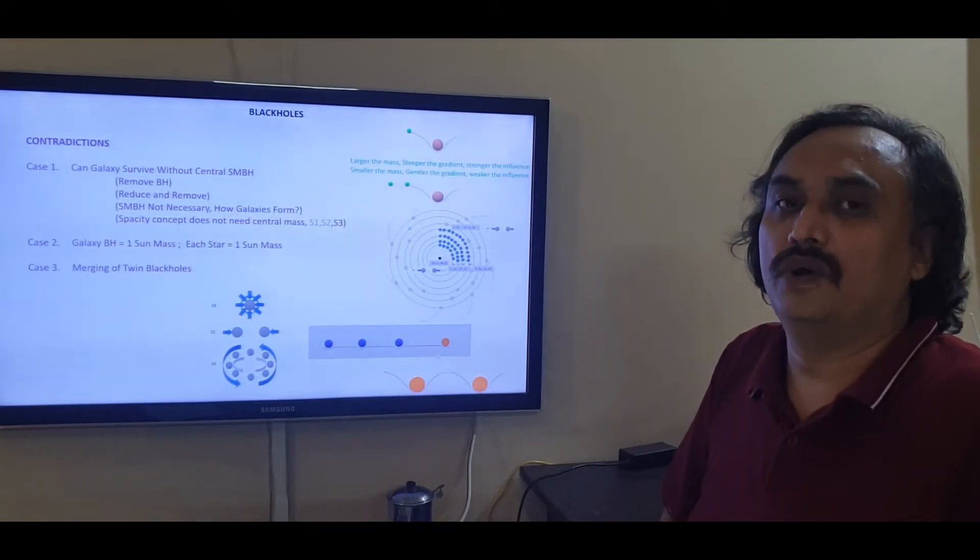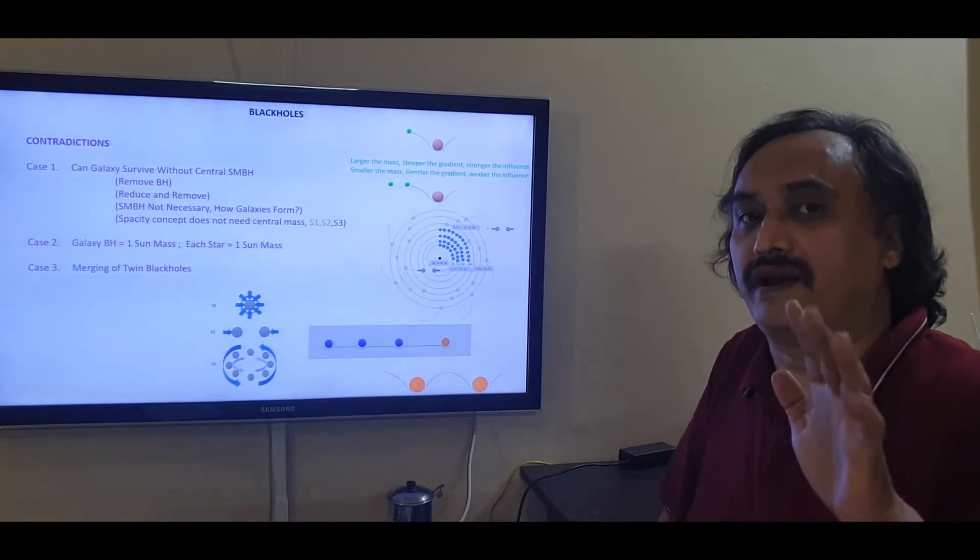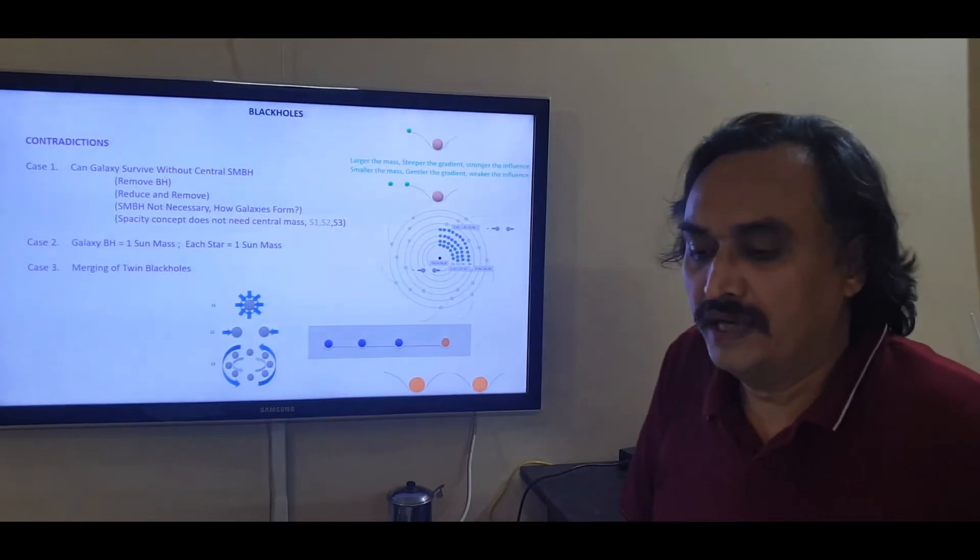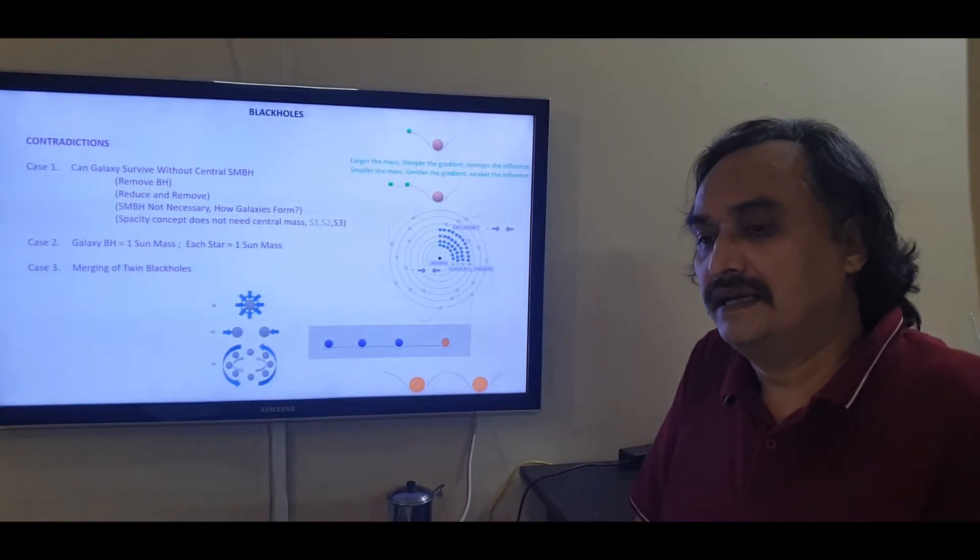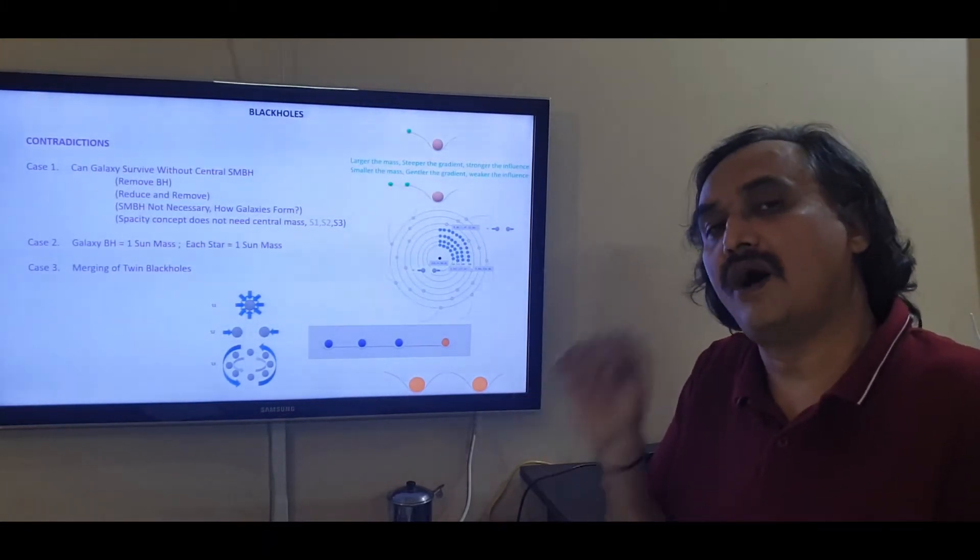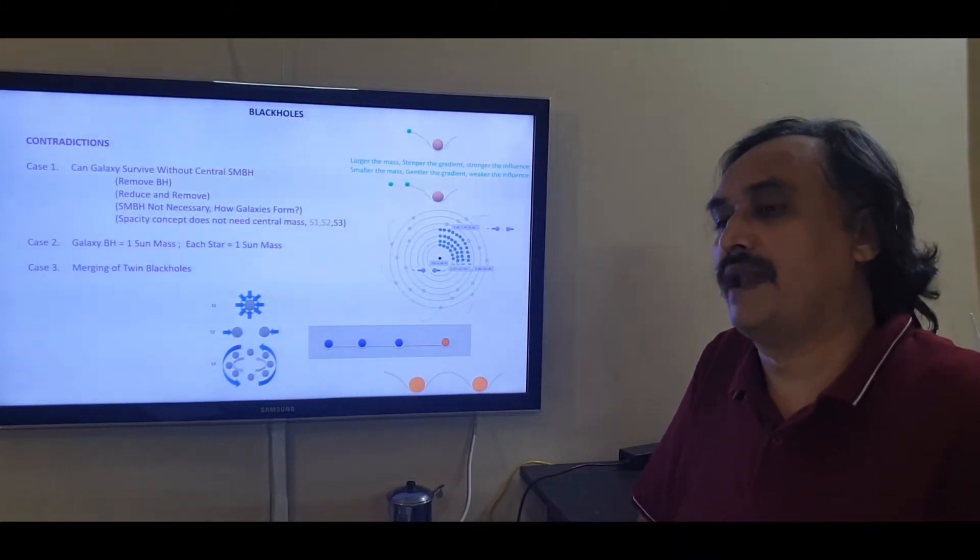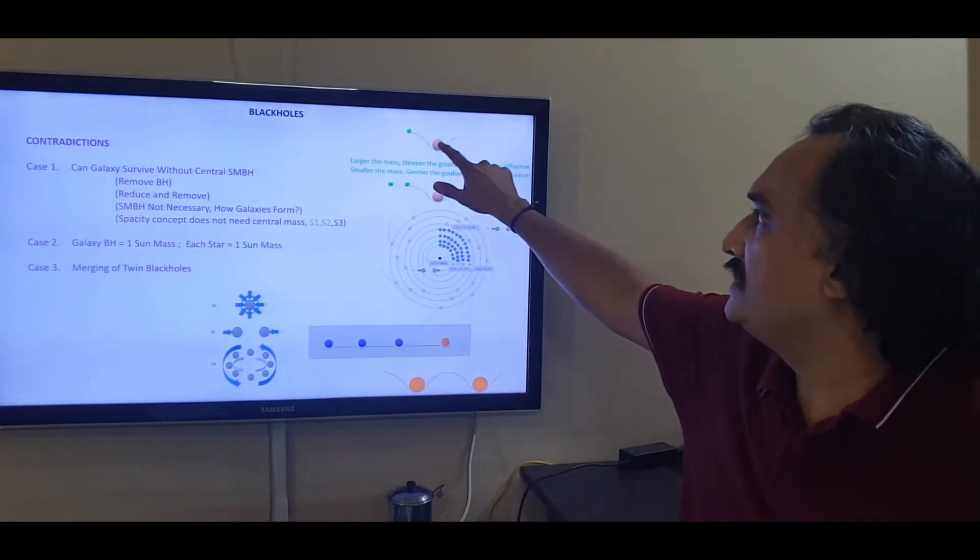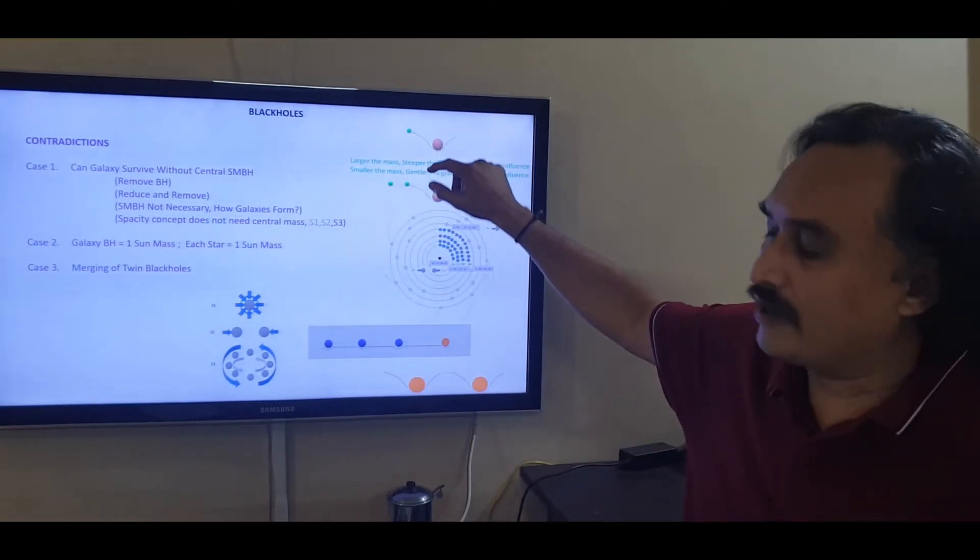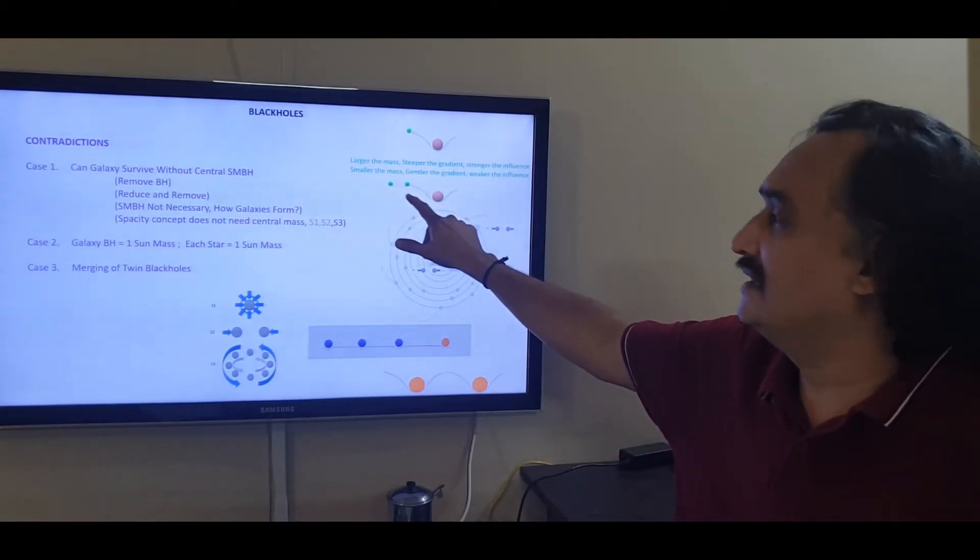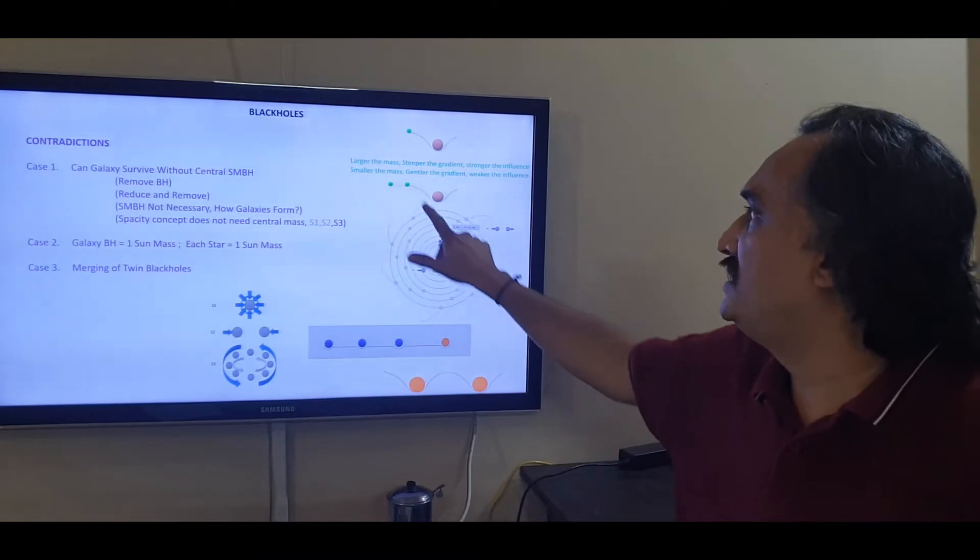We will also remove the black hole, but we will not remove it right away. We will reduce the size of the supermassive black hole. We know that it weighs 4 million suns. Let us as an experiment just take one sun mass out of it. Now the supermassive black hole weighs as much as 3,999,000 suns. What happens to the galaxy? So we have made this supermassive black hole slightly lighter. The influence will be lesser. So the mass which was here would move out.